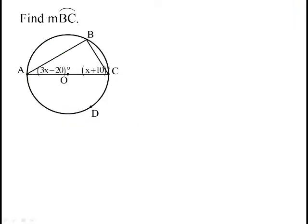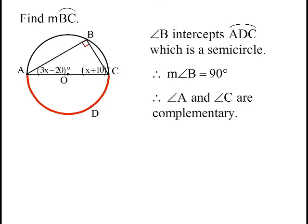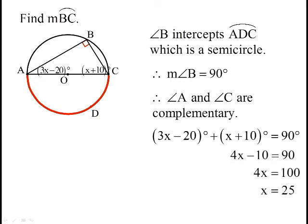Okay, so here's an involved little problem. Why don't you pause the video here and see if you can find the measure of arc BC. So we see that angle B intercepts this diameter and this semicircle ADC. Now, since ADC is 180 degrees, then that means angle B is going to be 90. So A and C then are going to be complementary, because you've got a little right triangle in there, triangle ABC. So A and C have to add up to 90. Now we can figure out what X is - X is 25.